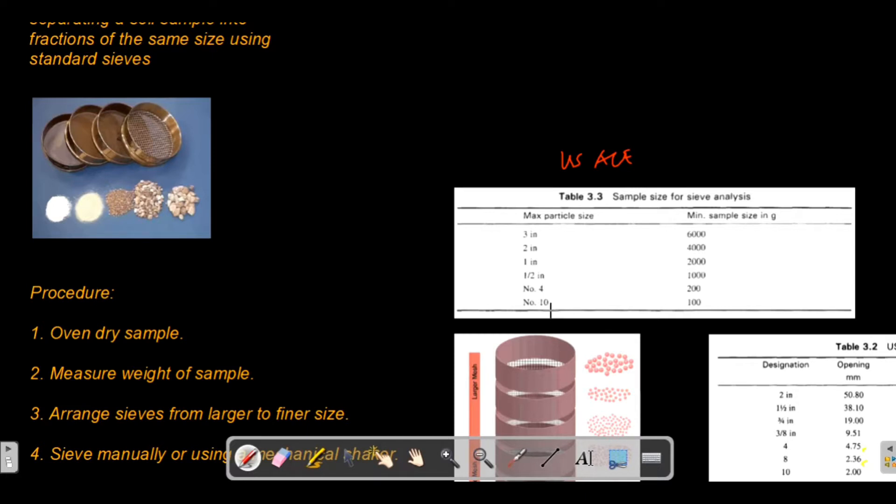For example, if your soil sample is dominantly gravel, that's number four corresponding to 4.75 millimeters of the diameter of the holes. You can have a minimum sample size of 200 grams. You can have 300, 400, or 500 grams as long as it does not go lighter than 200 grams.